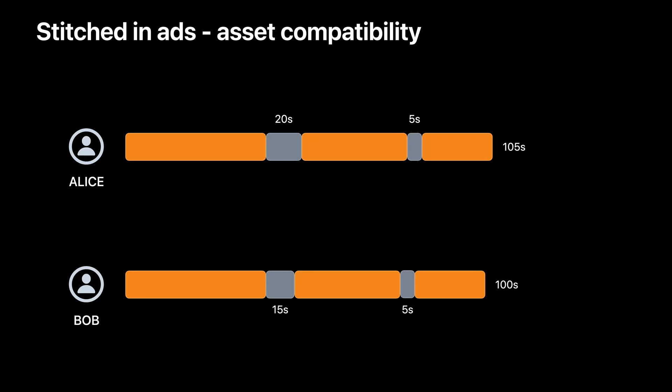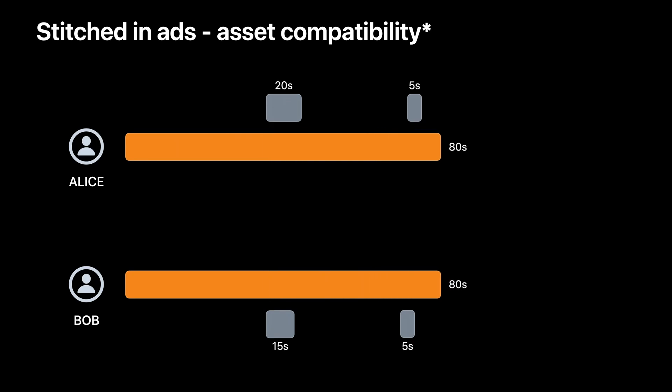So now, what should the assets look like for coordinated playback to work? If you were to look at this example, Alice and Bob have different duration ads stitched in, resulting in different asset durations. For these to be considered SharePlay compatible, we'd expect the actual content duration of the assets to match. Note that this applies only to video on demand content. For live content with stitched-in ads, we'd expect the durations of the ad breaks to match for all participants. If you think it might be a challenge to obtain the sample accurate time ranges, or if you wish to dynamically schedule targeted ads and live content, then you can use HLS interstitials to schedule ads.